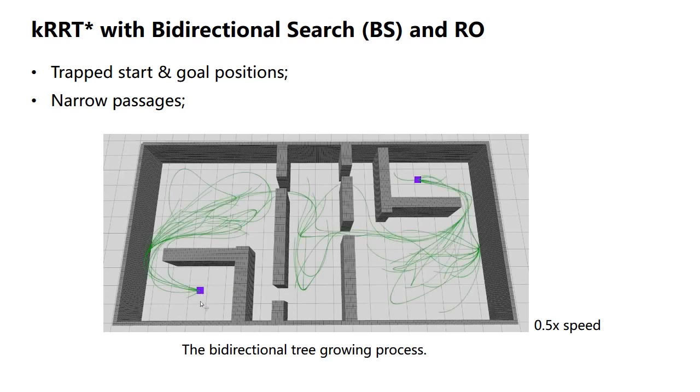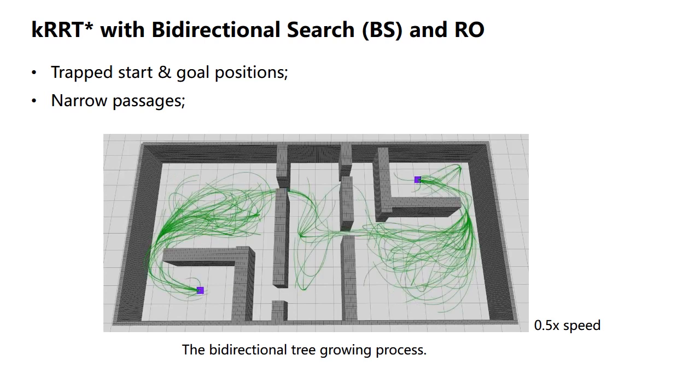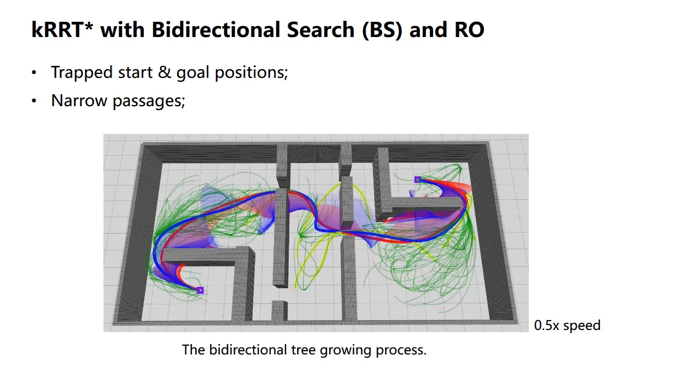We also develop bidirectional searching where two trees grow towards each other. This is useful for trapped starts and goals as well as narrow passages.